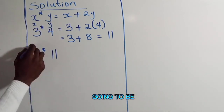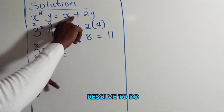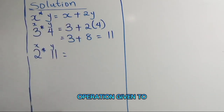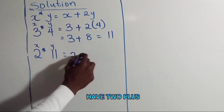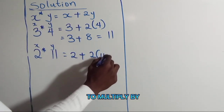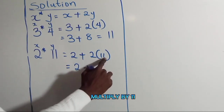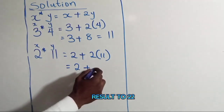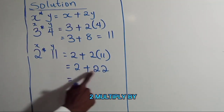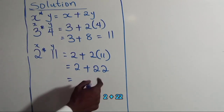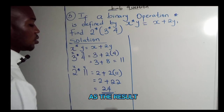Now 2 is going to be my x and 11 is going to be my y. So I'm going to resubstitute into the defined operation. I'm going to have 2 plus 2 multiplied by 11, which gives us 2 plus 22, and that's going to give us 24 as the result.